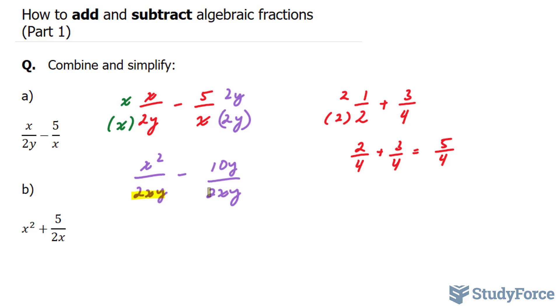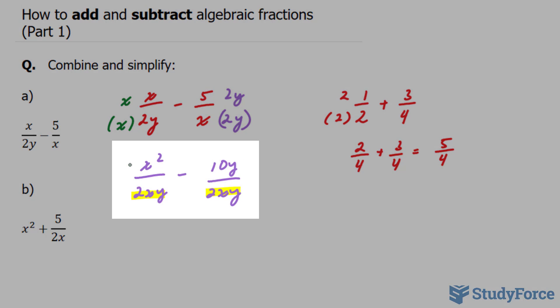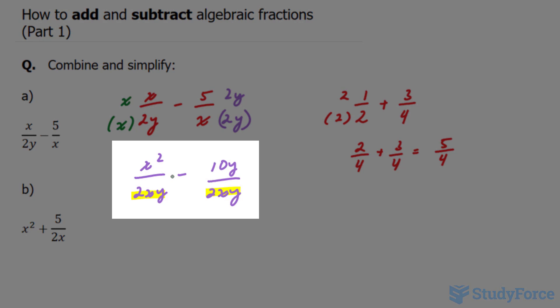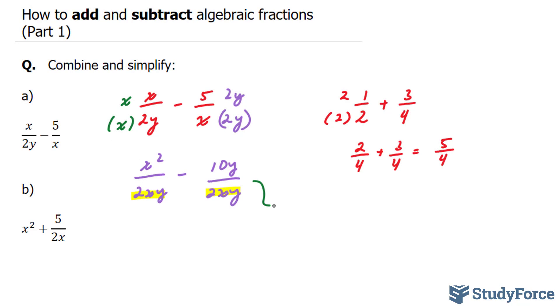minus 5 times 2y is 10y over the same denominator. The denominators now, which I'm highlighting, are the exact same. So we can add or subtract the numerators, whatever the case may be. In our case, it's subtract. But unfortunately, this term and this term are not like terms, so they cannot be combined. Your final answer becomes x squared minus 10y over 2xy.